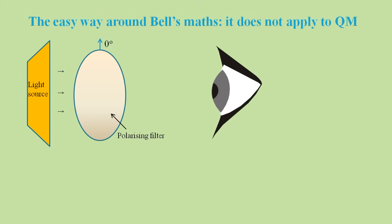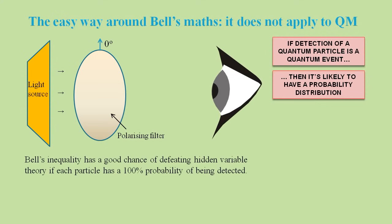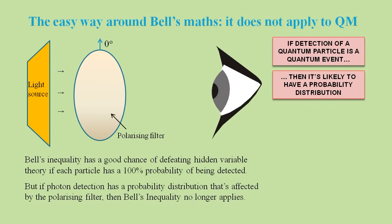But there's a problem with using Bell's Inequality in relation to quantum mechanics. If the detection of a quantum particle itself is a quantum event, then the very nature of particle detection should be probabilistic. Bell's Inequality holds if 100% of particles are detected, but if detection is probabilistic, then we could never get 100% detection rate, and so Bell's Inequality simply does not apply.